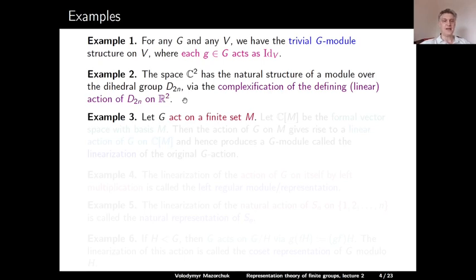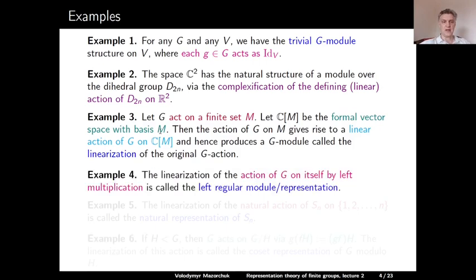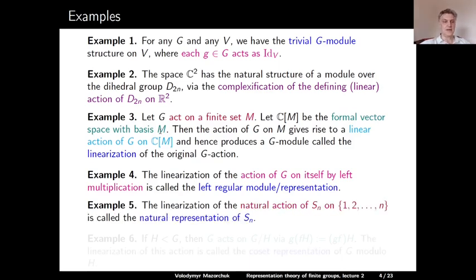Example 3: let G be a group acting on a finite set M. Consider the formal vector space in which the elements of M form a basis. Then the usual action of G on M gives rise to a linear action of G on this vector space, producing a G-module structure on ℂ[M], called the linearization of the original G-action. Example 4: the linearization of the natural action of G on itself by left multiplication is called the left regular representation of G, or the left regular module over G.